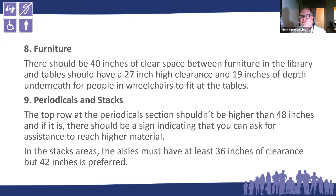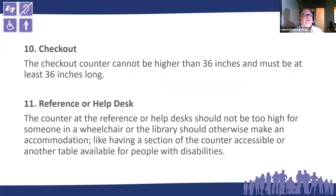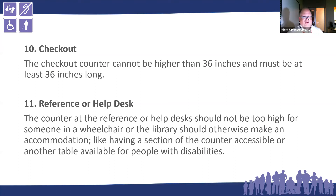Number nine: periodicals and stacks. The top row of your periodicals should not be higher than 48 inches. If it is, you need a sign indicating that patrons can ask for assistance to reach higher materials. In the stacks, aisles should be 36 inches of clearance — 42 inches is preferred. Number ten: your checkout counter should be no higher than 36 inches and at least 36 inches long. Your reference desk and help desk shouldn't be too high either — consider having an accessible section of the counter or a table nearby to accommodate people with disabilities.